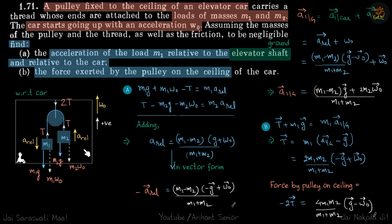We have an elevator that is moving up with a constant acceleration W naught. Inside that we have a pulley that is hanging by a thread, and on both sides of the pulley we have masses M1 and M2. We need to find the acceleration of M1 relative to the shaft, which is the ground, and relative to the car.